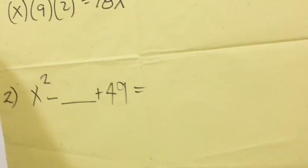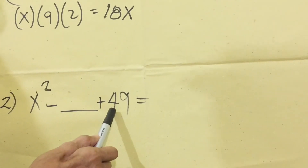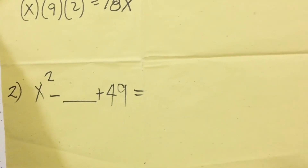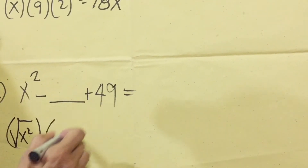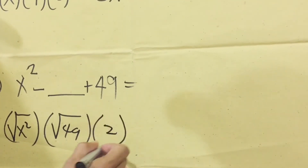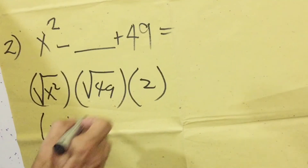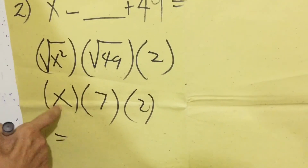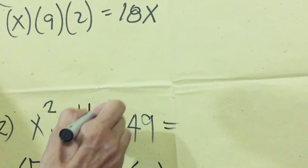Number 2. We're going to find the middle term again, and this time we have a negative middle term. So again, we're going to multiply the square root of the first term, x squared — which is x — times the square root of the last term, square root of 49, which is 7, then times 2, equals x times 7 times 2 equals 14x. So the middle term is 14x.